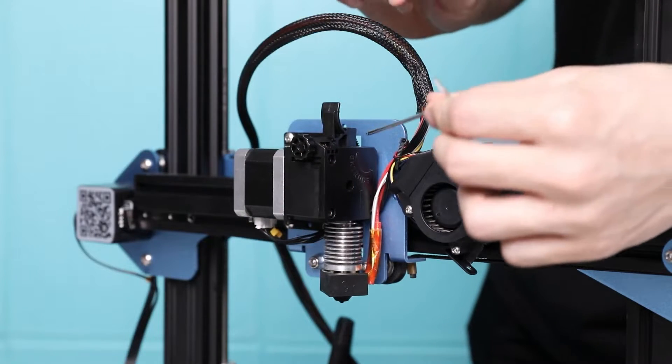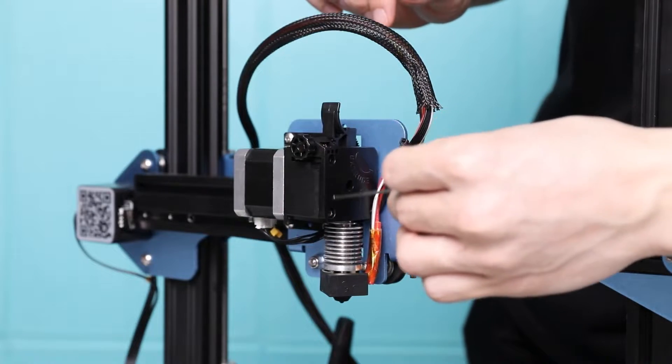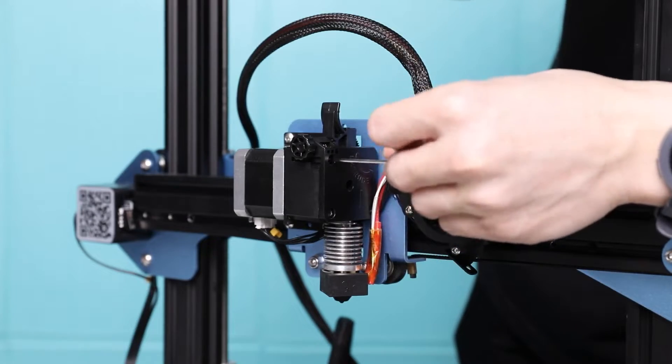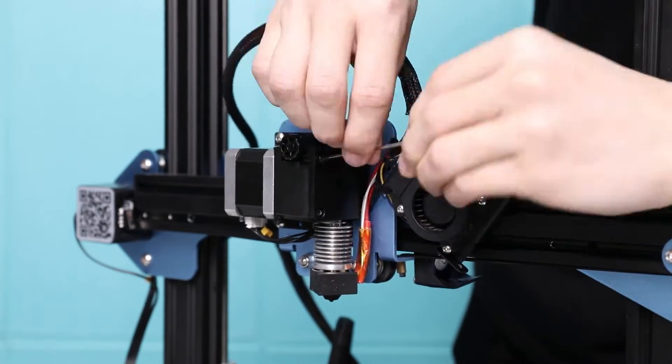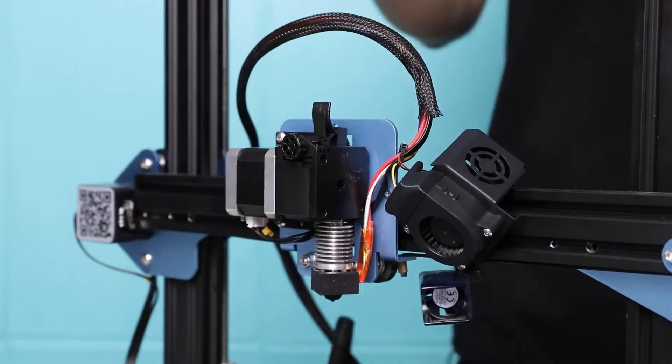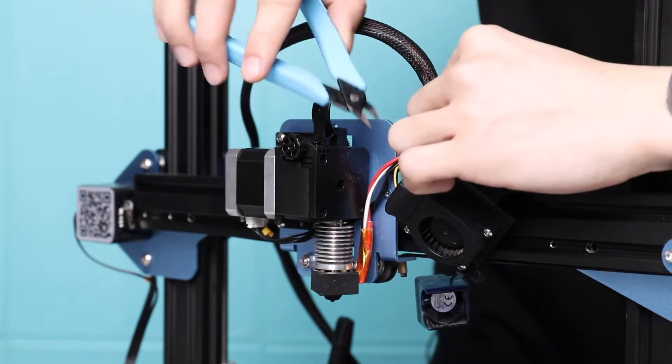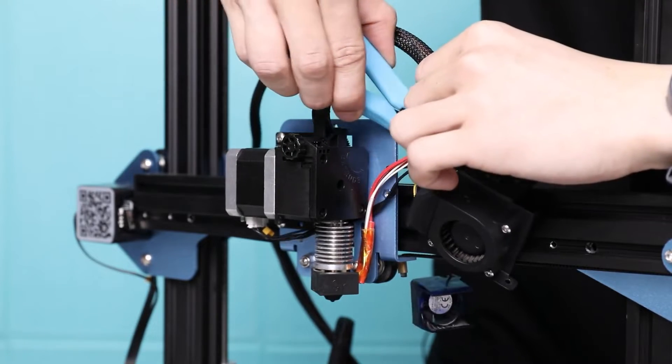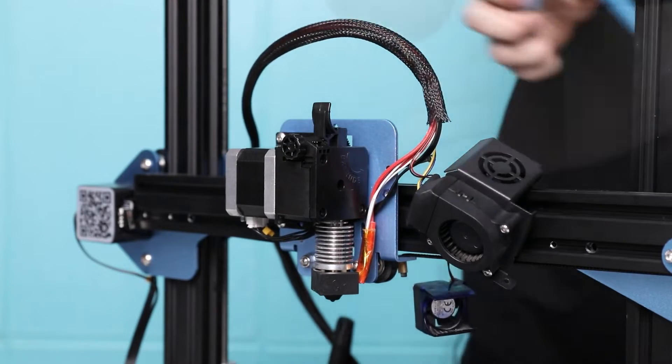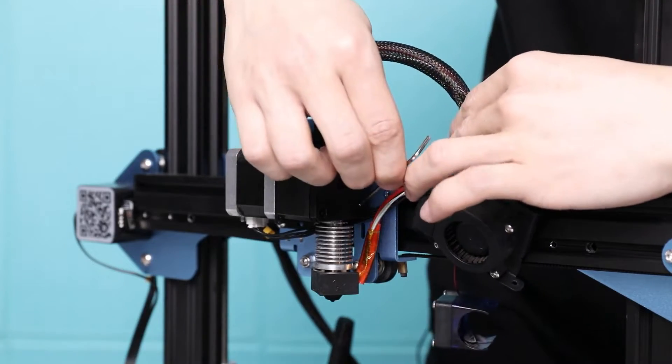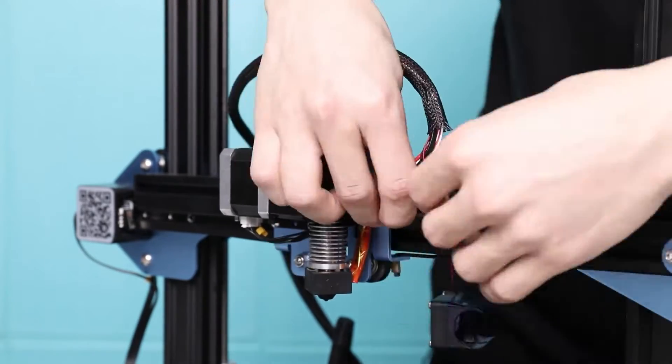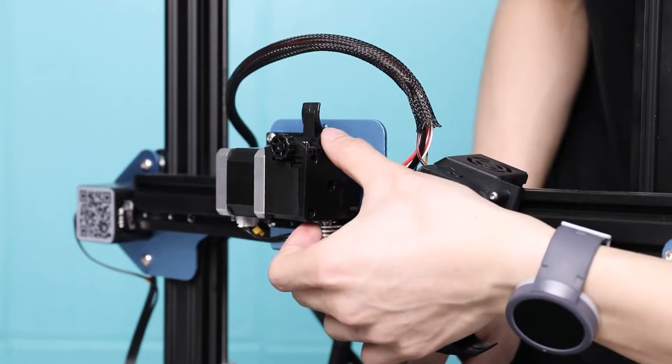Remove the screws securing the cover of the extruder. Take the side cutter, cut the zip tie, and you'll find there's a shorter screw under the wiring. Remove the cover of the extruder.